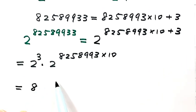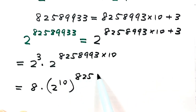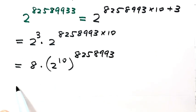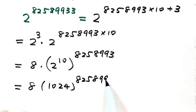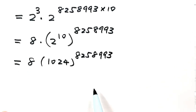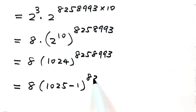So we have 8 times 2 to the power of 82,589,930. For this part, we're going to compute 2 to the power of 10 first, then raise that to another power. Since 2 to the power of 10 equals 1024, we get 8 times 1024 to some power.